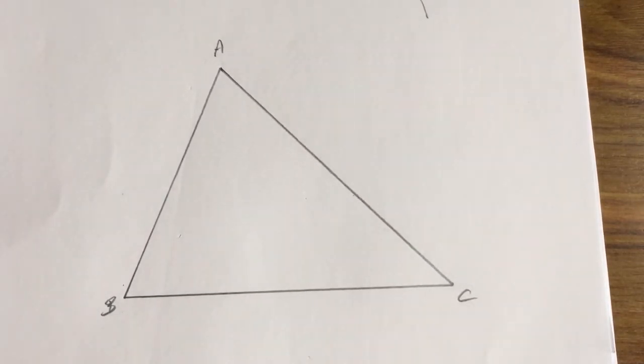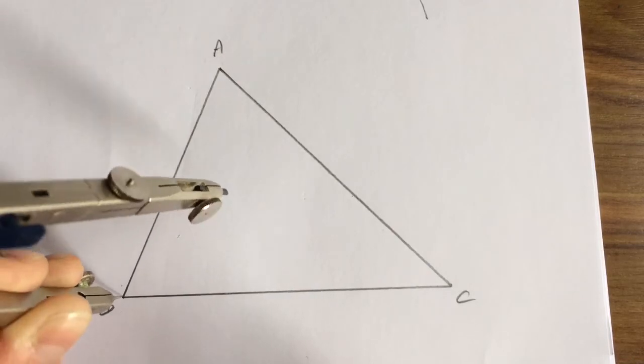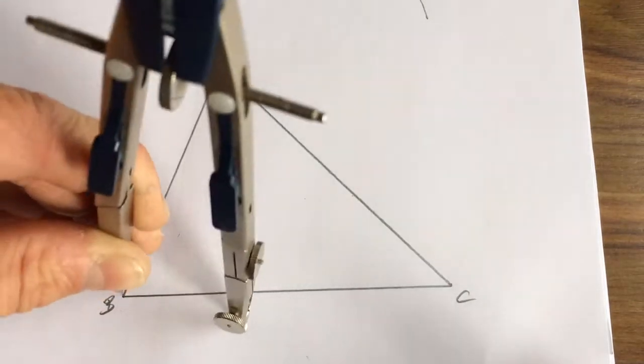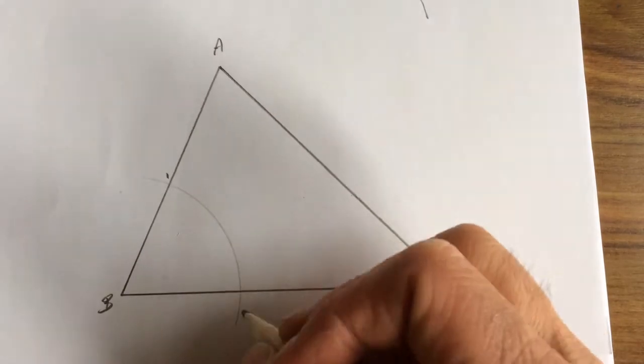So let's do the construction for this one. I'm going to bisect angle ABC. If you've forgotten how to bisect an angle, please check out construction number one. So I'm going to place my compass at B, reduce the radius down a little bit, and swing an arc to cross at locations one and two.